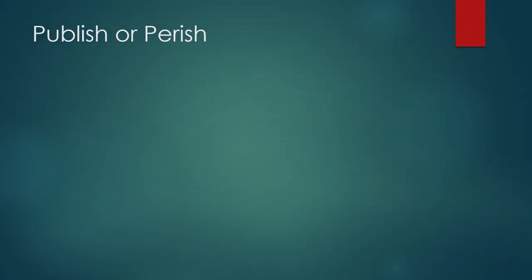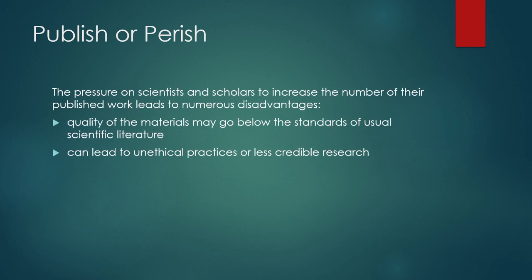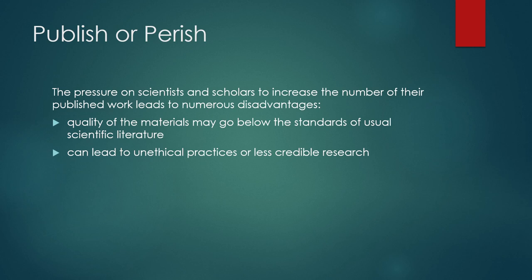Aside from the challenge with open access, another problem concerning scientific journal articles is 'publish or perish.' It emphasizes the quality of articles being prepared or published. Due to limited attention and support for scientific publications and the pressure to produce more output in a short time with limited resources, there are scientists or authors who resort to publishing materials below the standards of usual scientific literature. This affects the kind of information shared with the scientific community and end users like students and the general public.